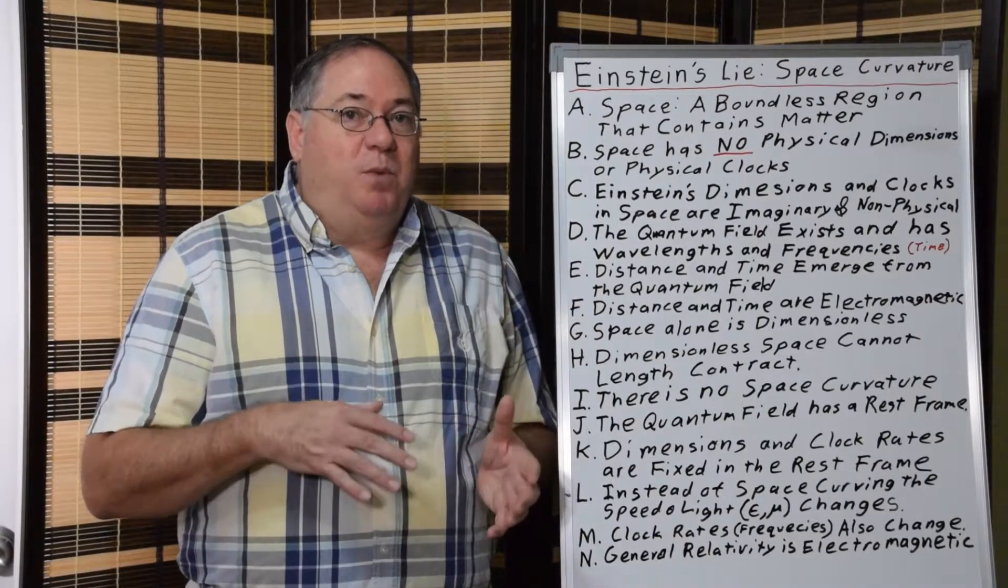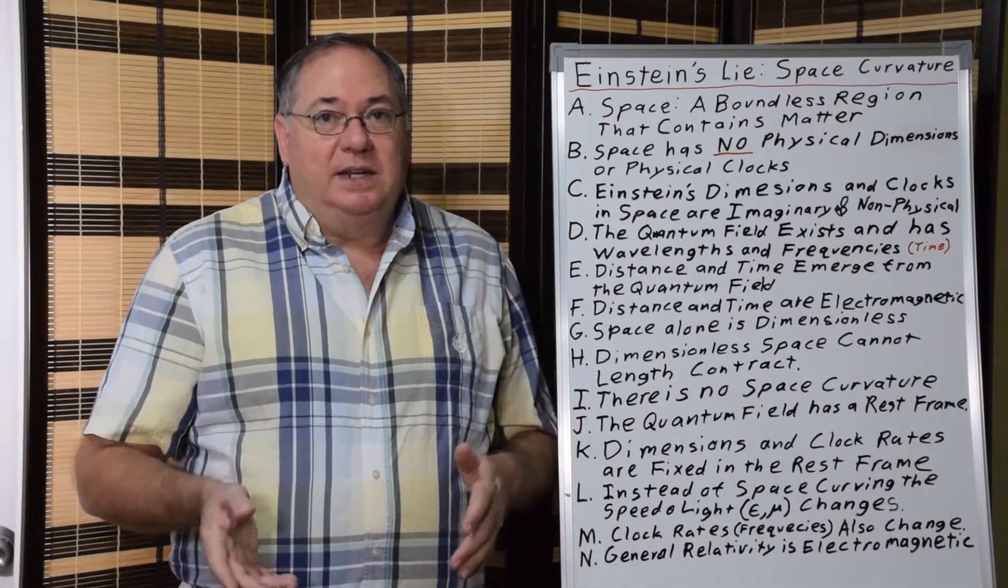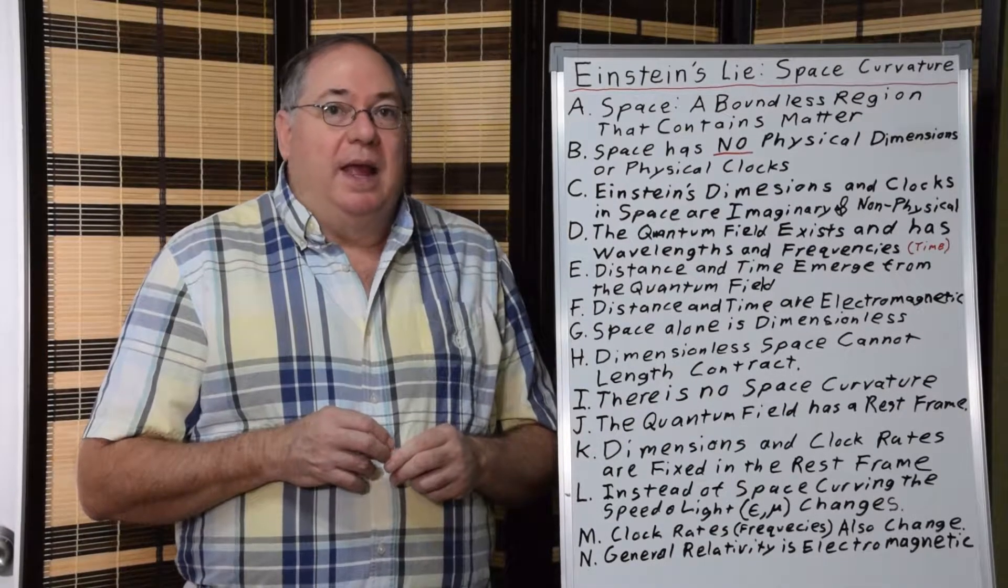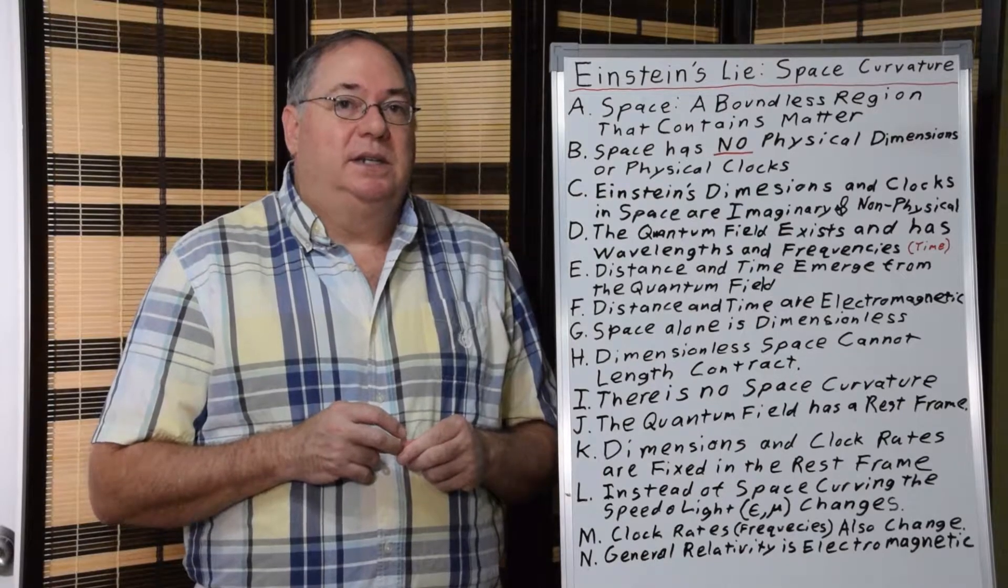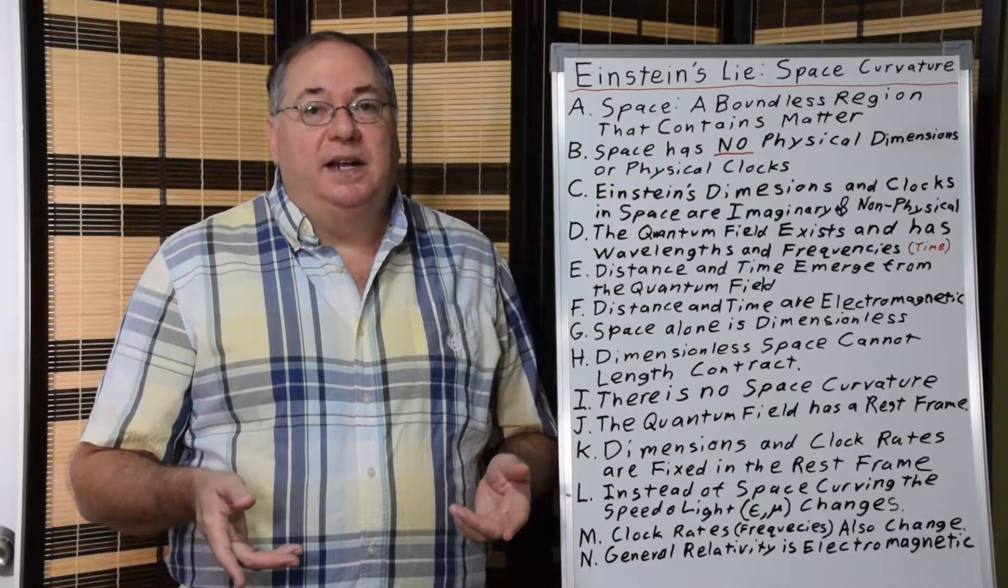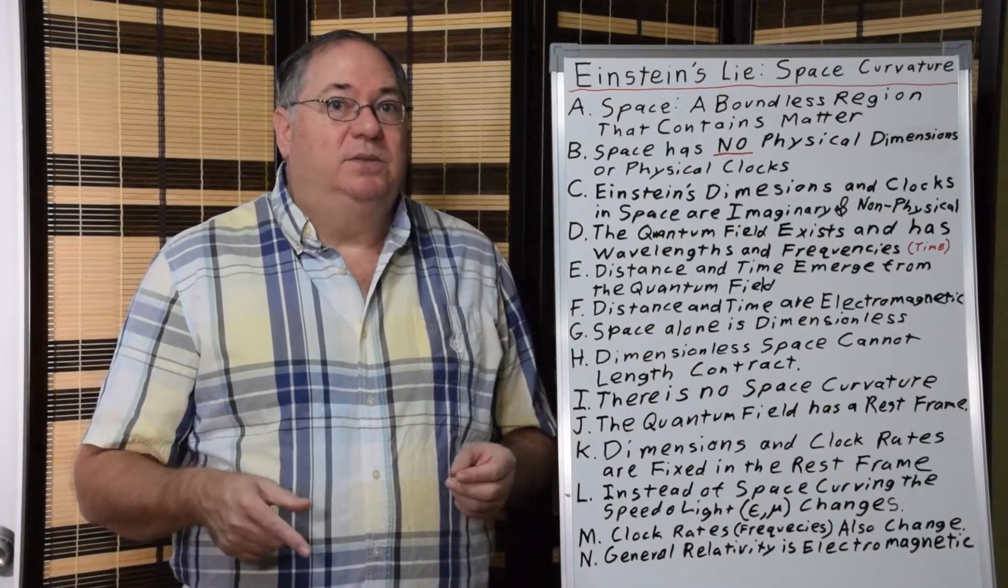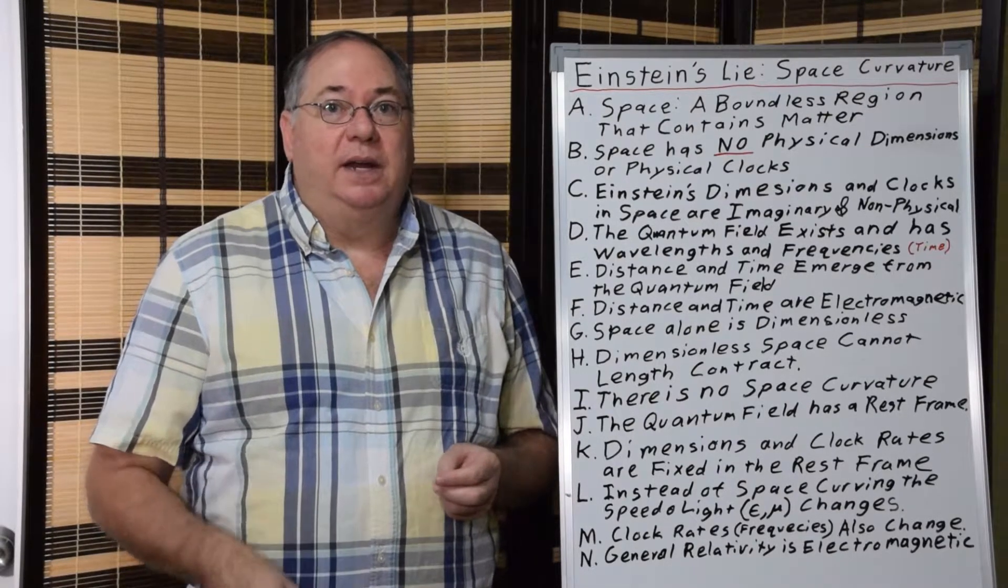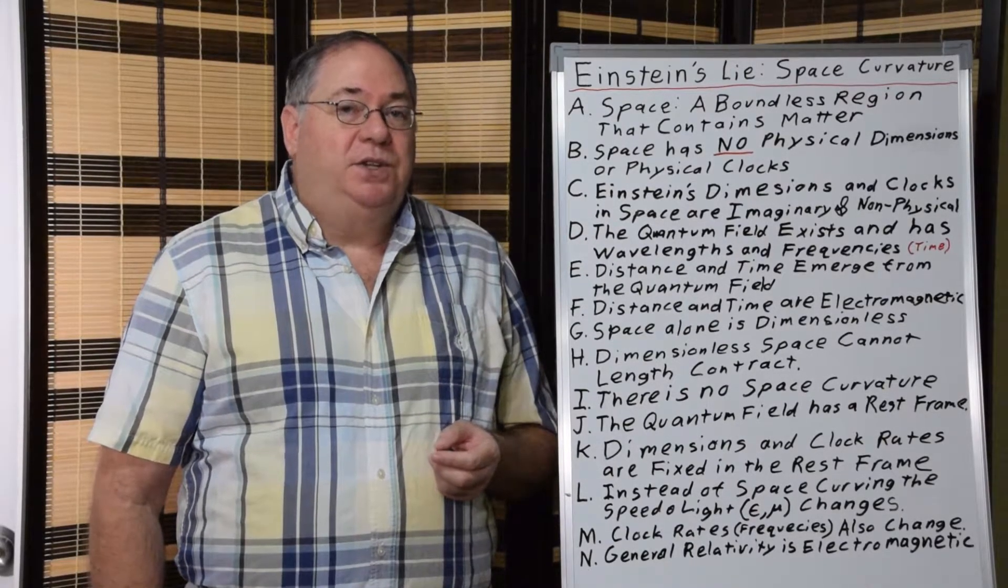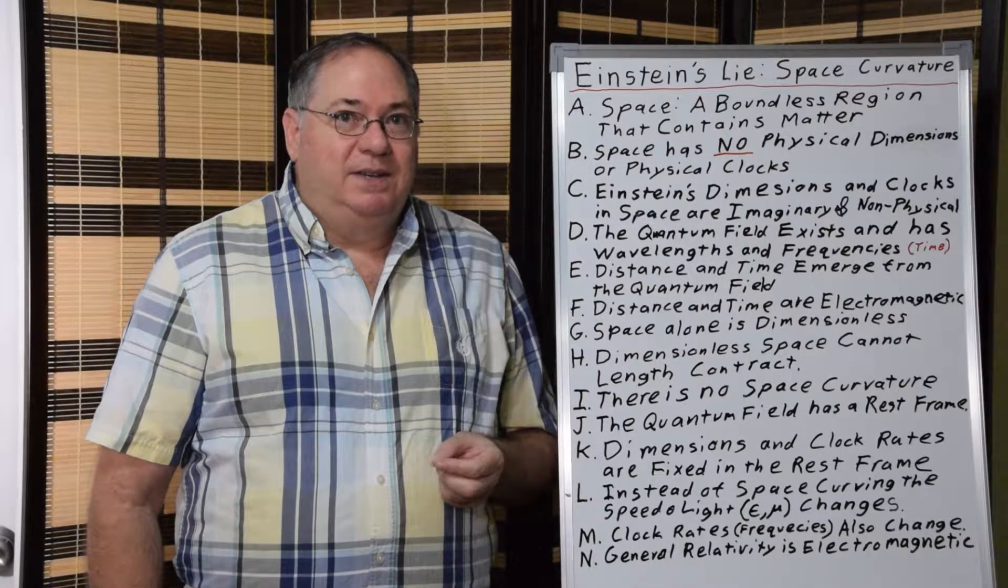But most importantly, when we're talking about relativity and general relativity, the dimensions and clocks of space emerge from the quantum field. And so, we have a choice in physics when we deal with relativity and general relativity. We can either use Einstein's imaginary clocks and rulers or we can use the physical clocks and rulers of quantum field theory to develop the theory. And given a choice like that in physics, we must choose the real physical clocks. Imaginary physics is not physics.